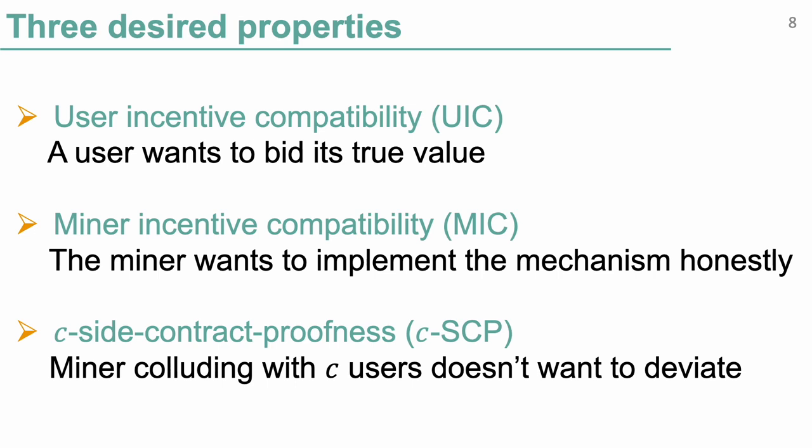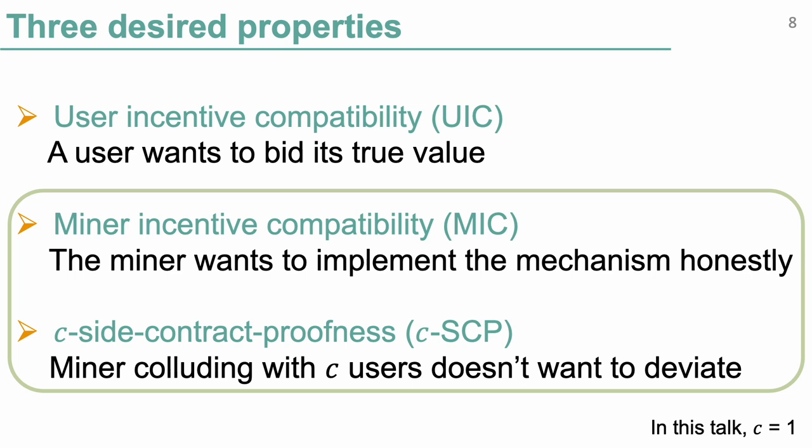This is happening in the real world where there are middleman platforms like Flashbots, whose whole purpose is to facilitate such miner-user coalitions. So we also want C-Side Contract Proofness, or CSCP for short. In particular, if a miner colludes with up to C users and their goal is to maximize their joint utility, we want their best response to be to follow the protocol honestly. In the main body of this talk, I'm going to assume C equals one — miner colluding with only one user — for simplicity. At the end, I will discuss the general case where the miner colludes with more users.